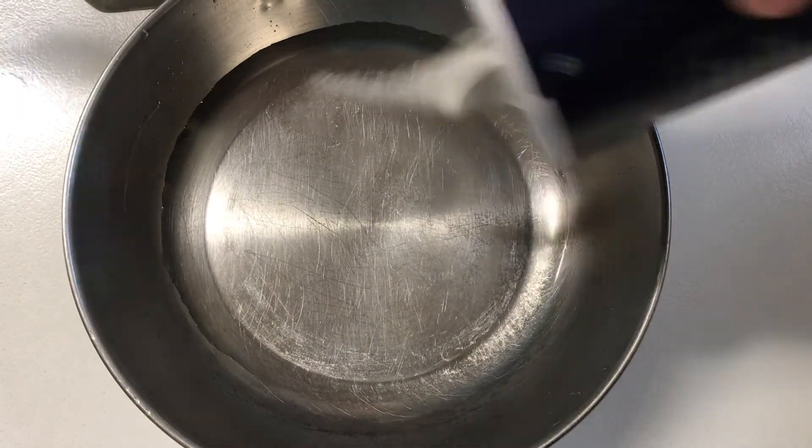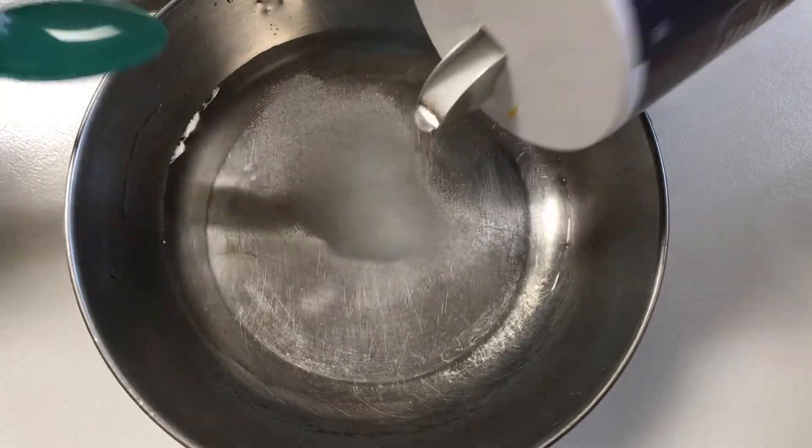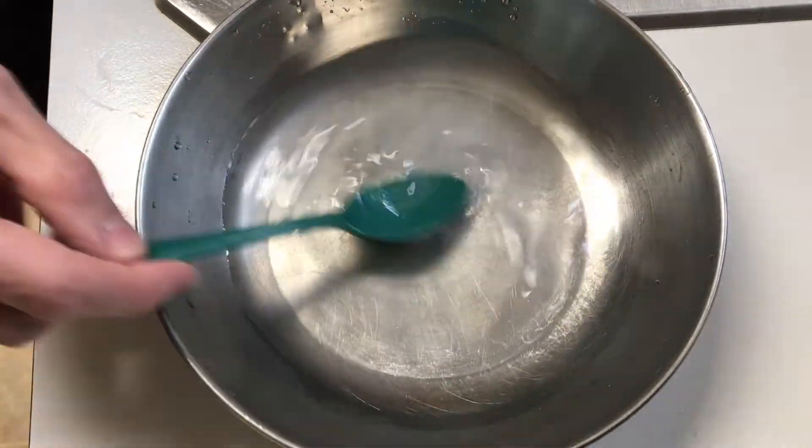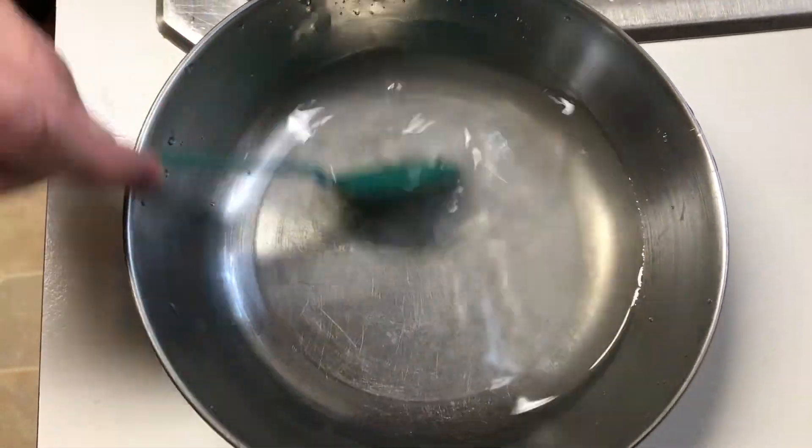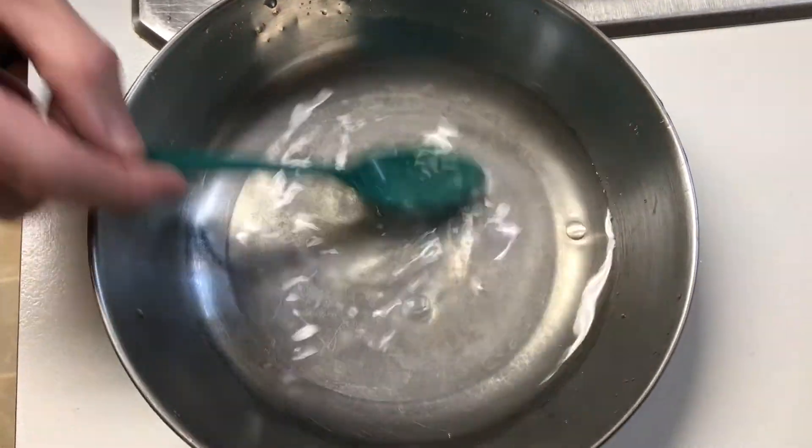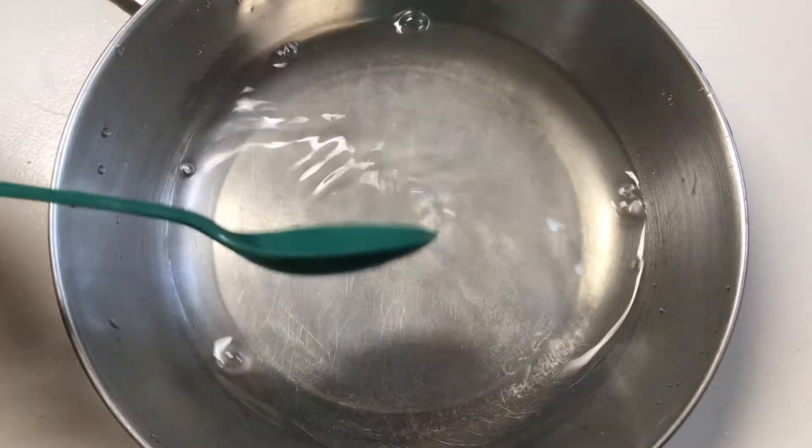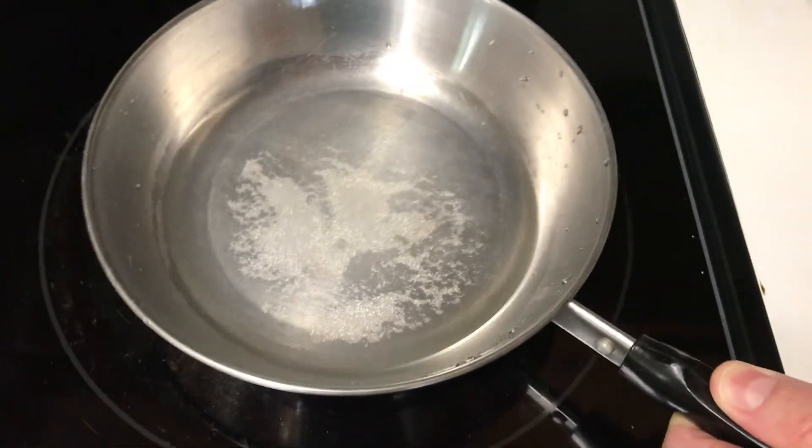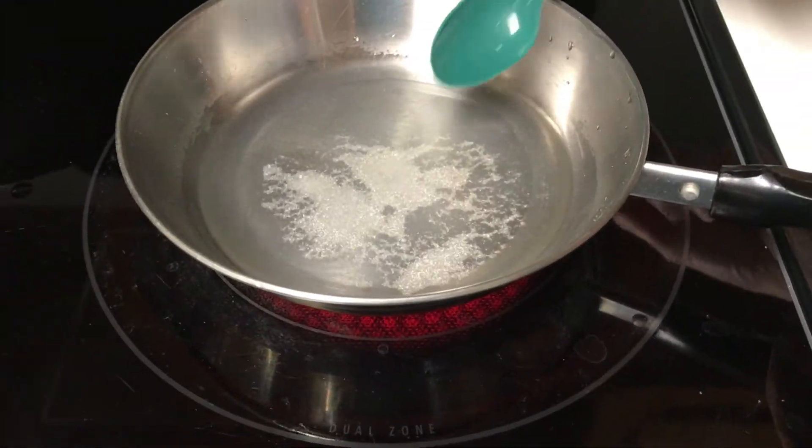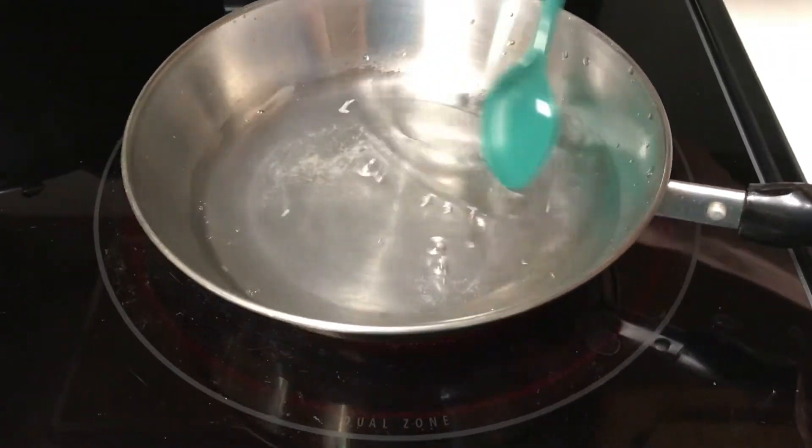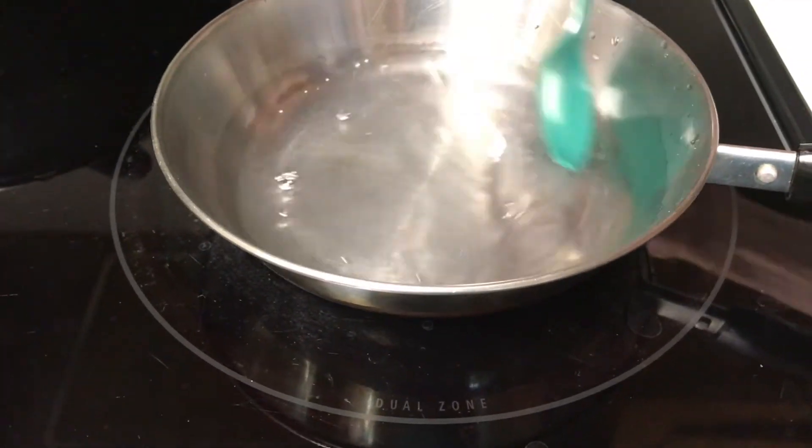Here's another commonplace example. Table salt dissolves better in hot water than in cold water. If we add table salt to water, eventually we get to the point where the salt won't dissolve anymore. Grains of salt just drift around in the water. If we add heat, those grains of salt finally dissolve. Again, raising the temperature favors the formation of product, and lowering the temperature favors the formation of reactant.